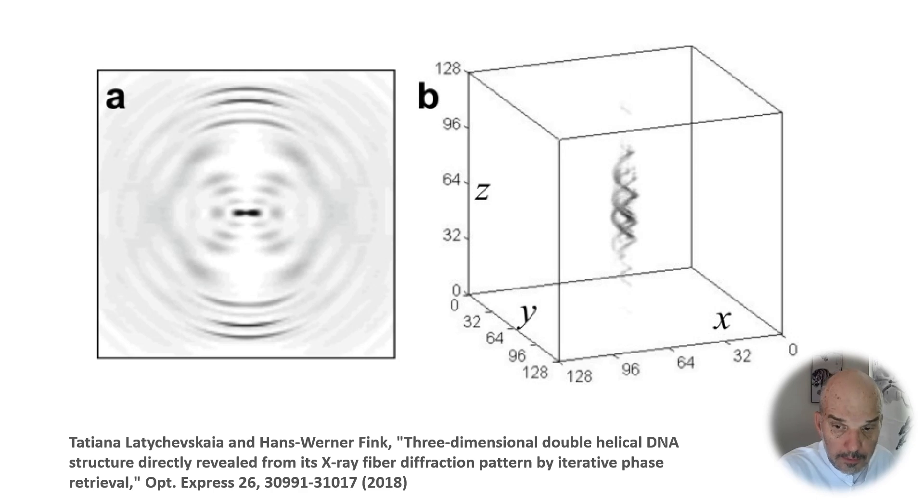This recent work shows a rotationally blurred average diffraction pattern on the left and then a three-dimensional reconstruction of the double helix of DNA on the right. This is done with phase retrieval, and that's our topic for today.